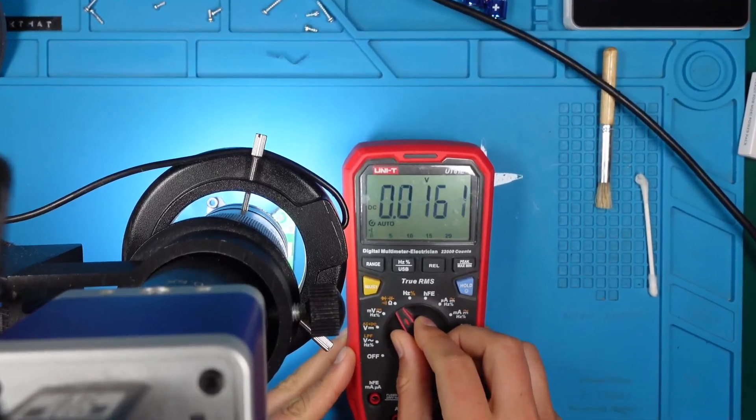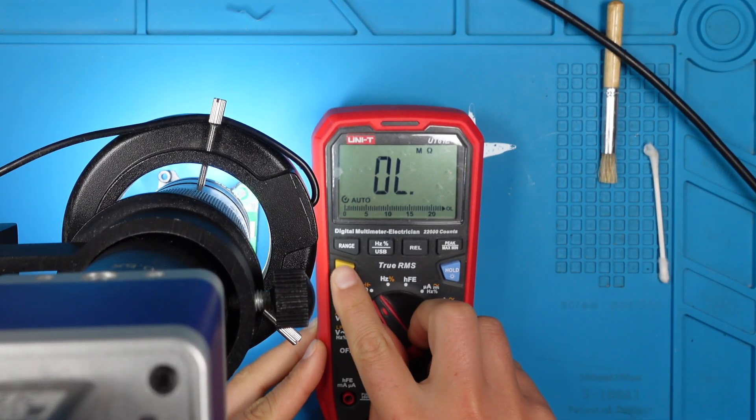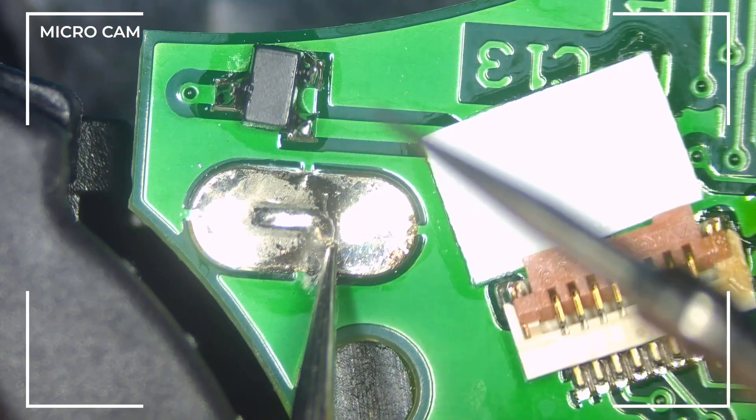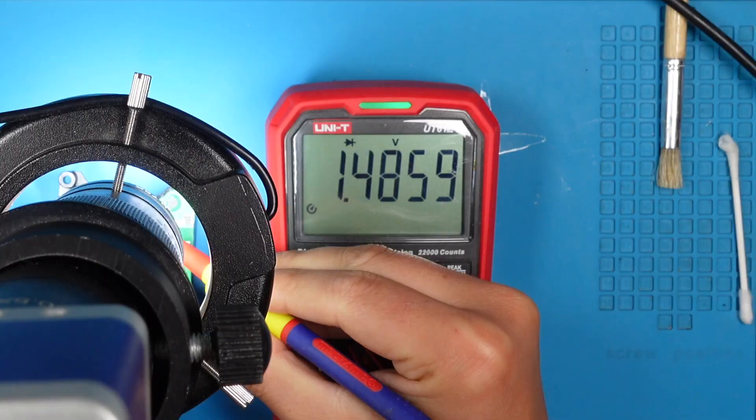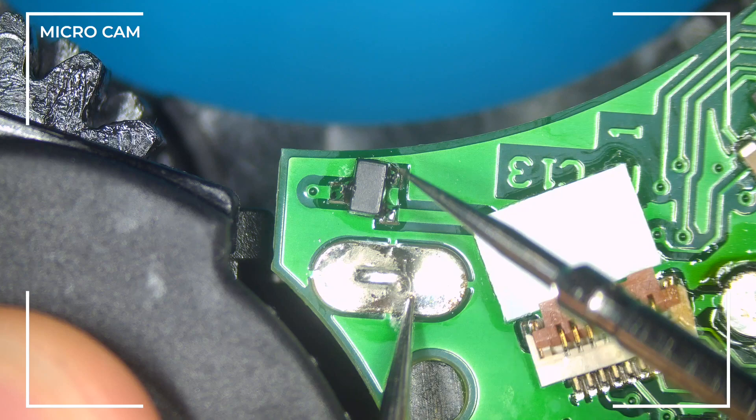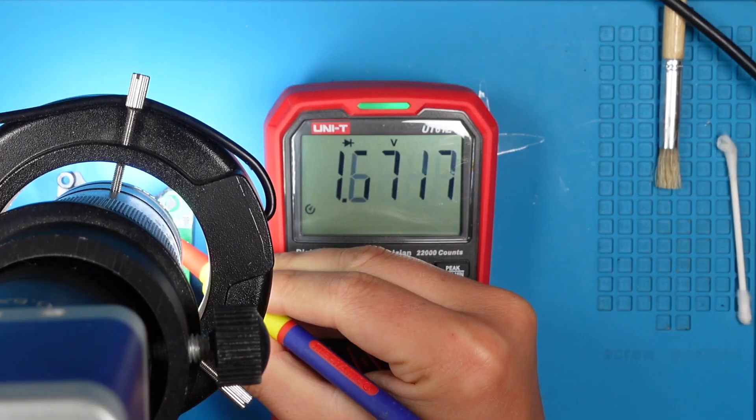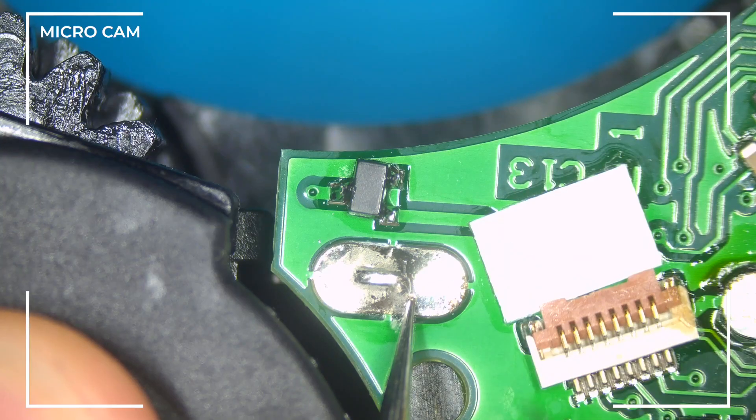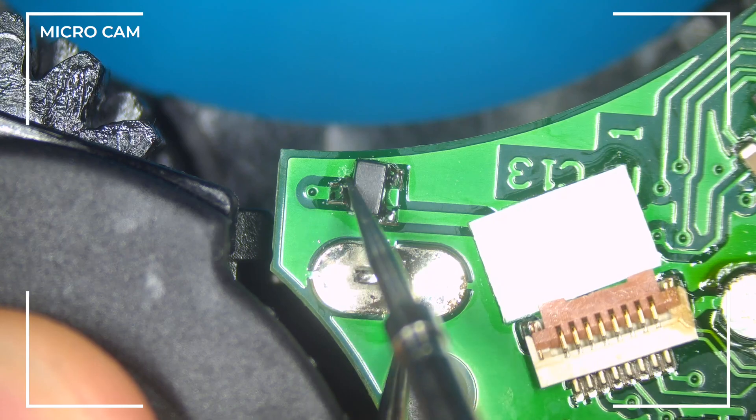Nice! Time to grab our multimeter in diode mode to see if we get a voltage drop as we measure each leg of our soldered component. Let's check each leg. As you can see the multimeter shows a voltage drop for each leg. This is a good sign.